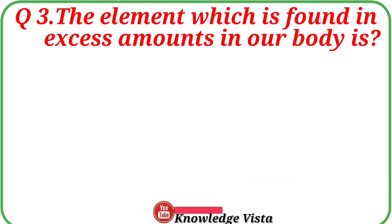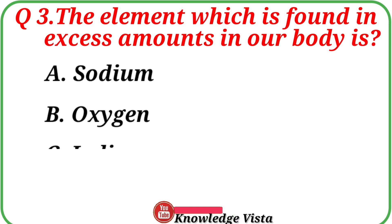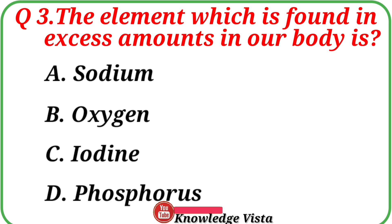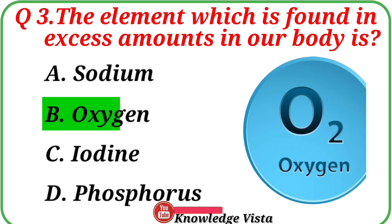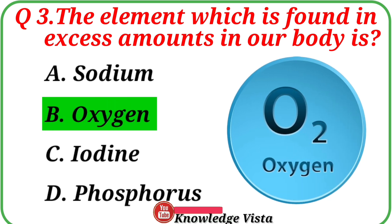Question number 3: The element which is found in excess amounts in our body is. Your options are: A. Sodium, B. Oxygen, C. Iodine, D. Phosphorus. Correct answer is option B, Oxygen. Oxygen is the most abundant element found in the human body.